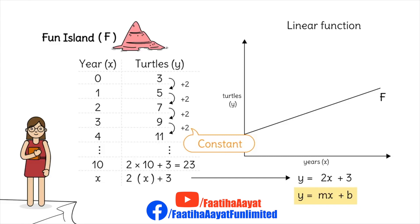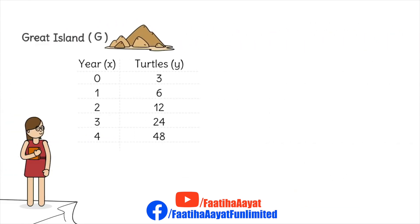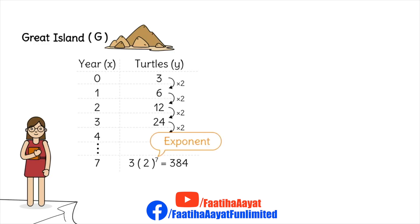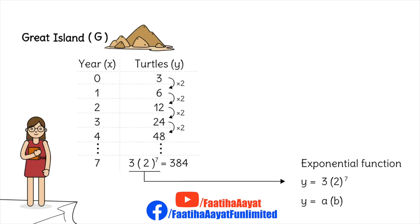Now let's take a look at Island G. Here we can multiply by two — we have a multiplier, an annual multiplier, and it's multiplying by two every time. So if we want to figure out the number of turtles in year seven, then the number of turtles we started with, which is three, times two to the power of seven — that is our exponent. And look, that's perfectly an exponential function: y equals to a times b to the power x.